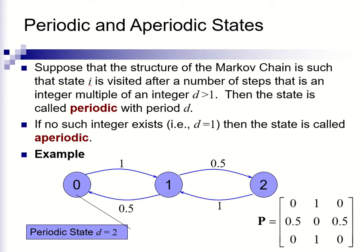I'm going to talk about the difference between periodic and aperiodic states. Suppose that the structure of a Markov chain is such that state i is visited after a number of steps that is an integer multiple of an integer d greater than 1. Then the state is called periodic with period d.